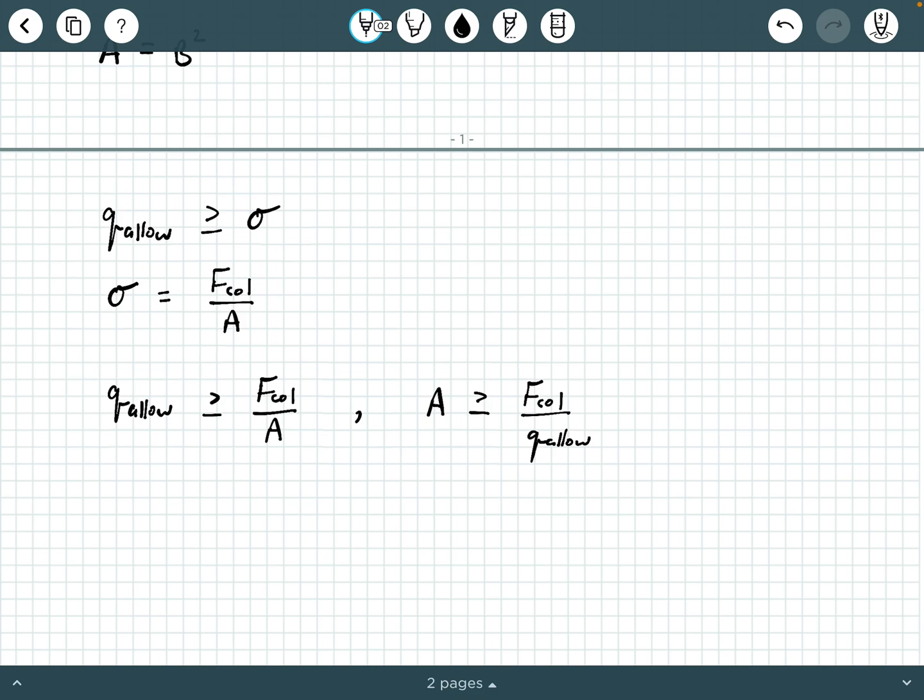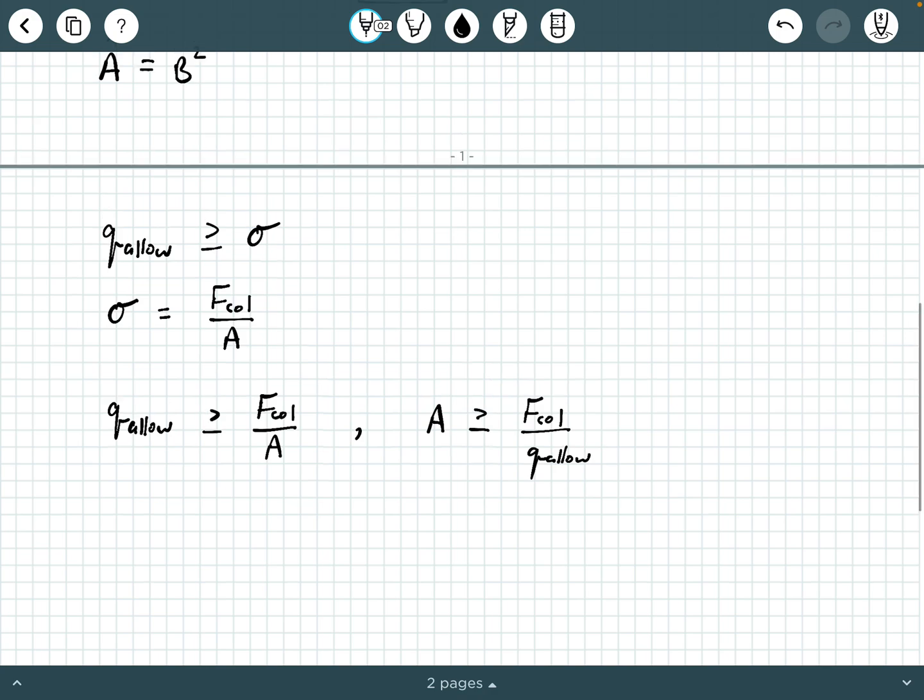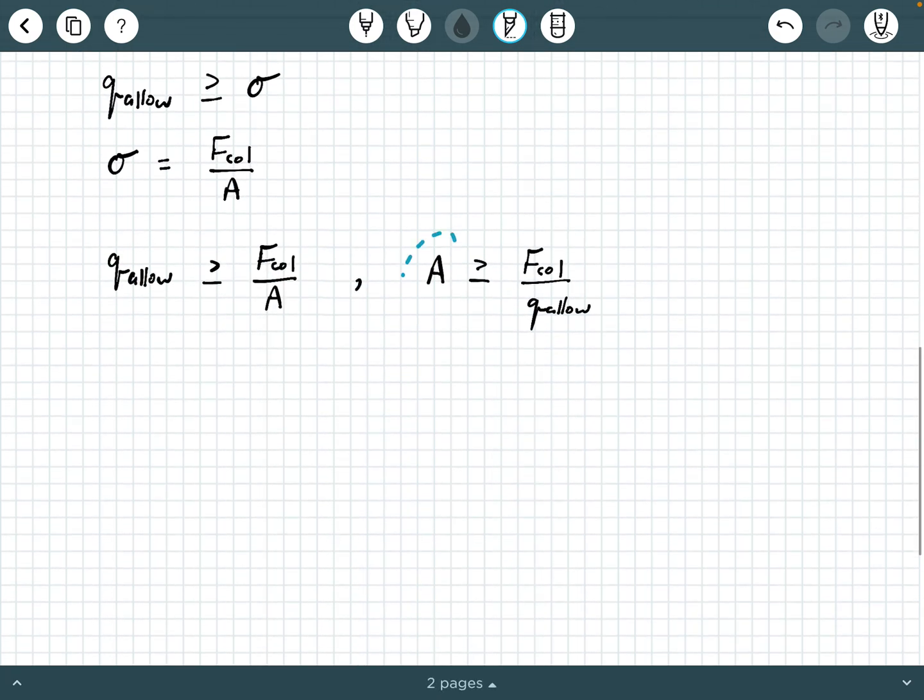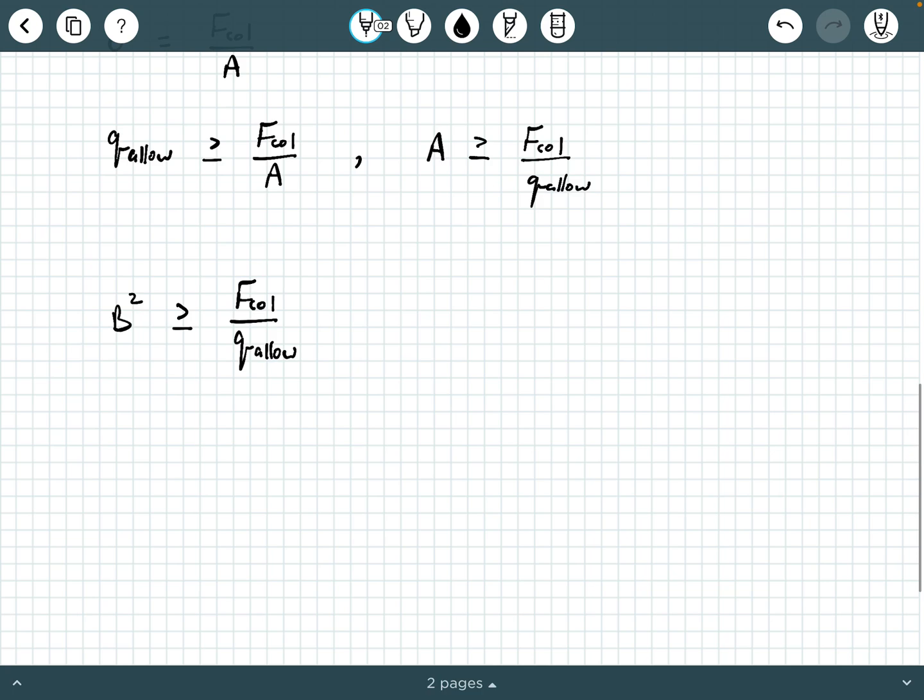So we had this algebraic rearranging in our previous video. Well, now, if we know that the footing we're interested in is square, and we know that the area is equal to B squared, what can we do? Well, instead of A here, we can substitute in B squared for A. So coming down over here, we can now say B squared must be greater than or equal to F call over Q allow. And then what we really want is B, so we can take the square root of both sides and take the positive of those roots. Because if you remember from math, when you take a square root, you typically introduce a positive and a negative root if you're dealing with real numbers. So we're just going to be interested in the positive root. So we're going to say B must be bigger than or equal to the square root of F column divided by Q allow.